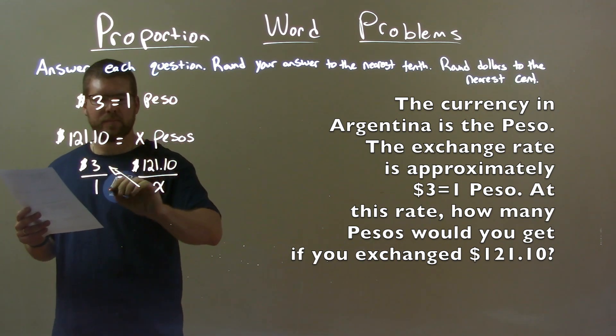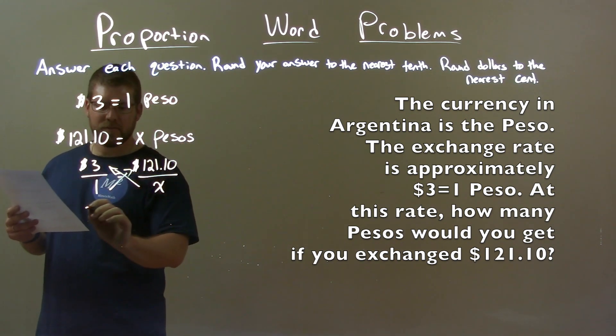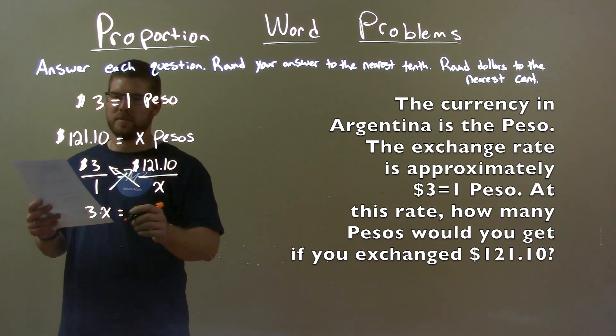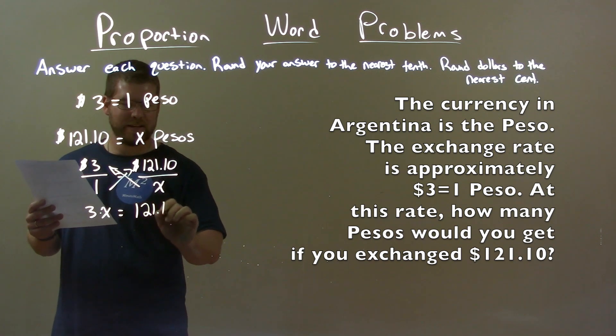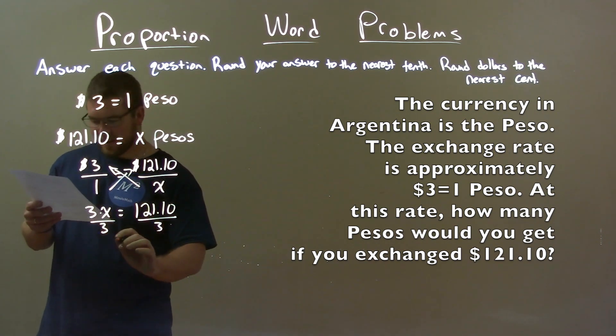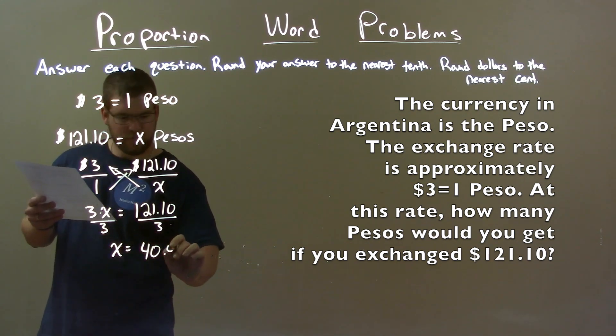We cross multiply here. Three times X is three X. And one times one twenty-one point ten is one hundred twenty-one point ten. We then divide by three on both sides to get X by itself, and X equals forty point four.